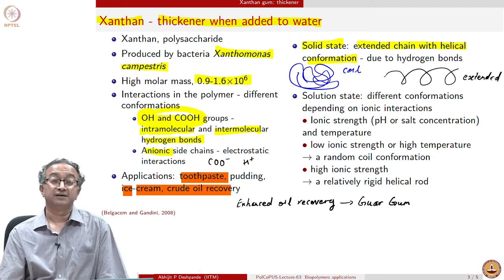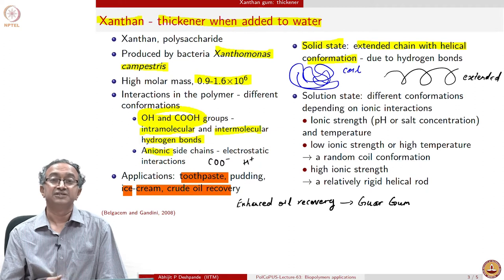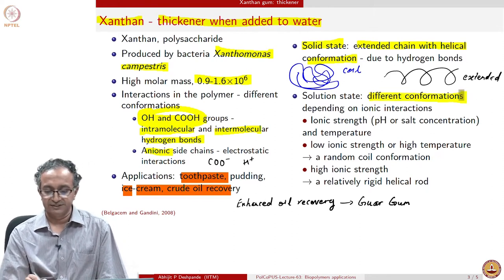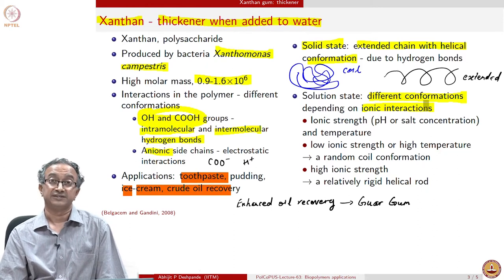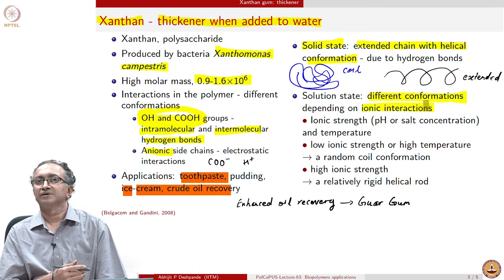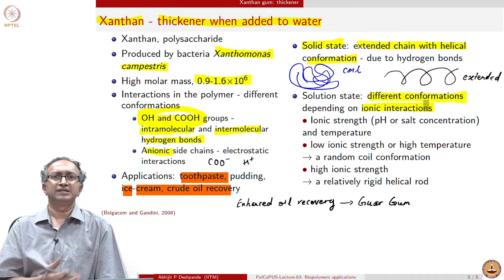Looking at the solution state of xanthan gum, depending on the conditions of the solution, different conformation states can be seen. The conformation changes depending on the ionic interactions. We have ionic species such as COO minus, H plus, Na plus, K plus, Ca2+, and SO4 2 minus — all of which interact with each other.